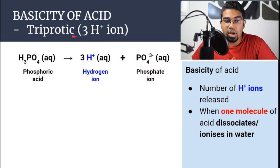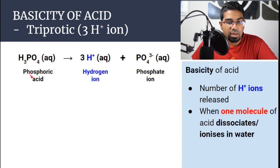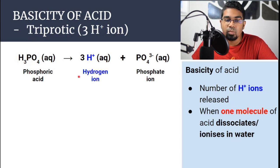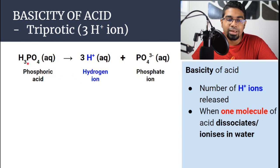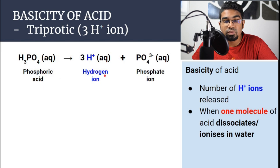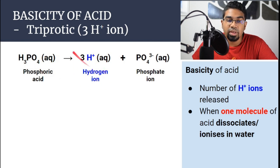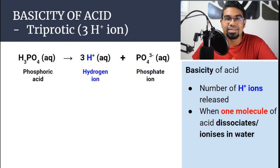Then we have triprotic. Tri is a prefix for three. Phosphoric acid has three hydrogen atoms. When dissolved in water, phosphoric acid will release three hydrogen ions. Therefore, it is known as a triprotic acid or tribasic acid.